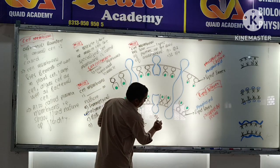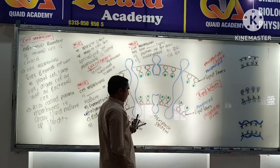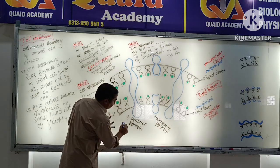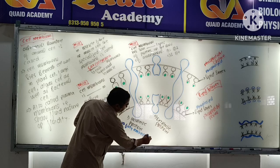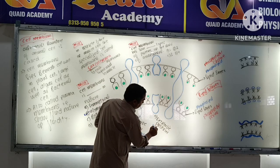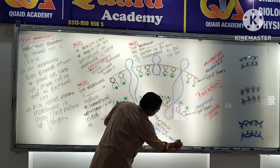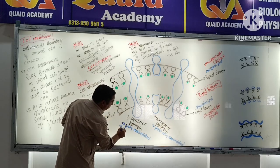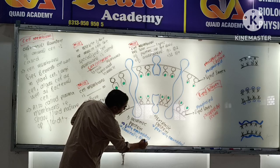The second type is extrinsic protein. Intrinsic protein is fully embedded and covalently bonded tightly within the membrane. Extrinsic protein is partially embedded and loosely or weakly bonded to the membrane surface.